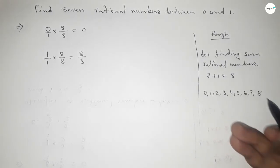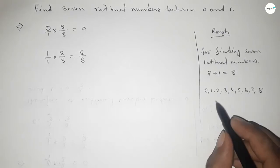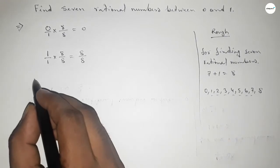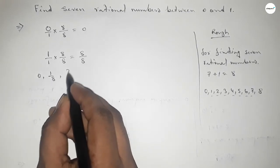Okay, so here all the rational numbers are: 0, 1 over 8, 2 over 8, 3 over 8, 4 over 8, 5 over 8, 6 over 8, 7 over 8, and last one 8 over 8.